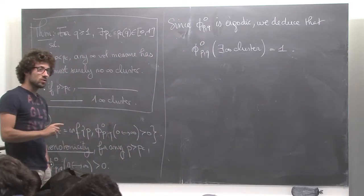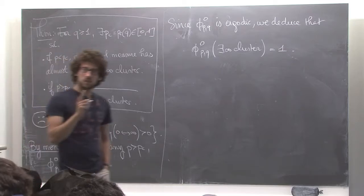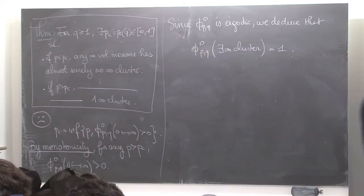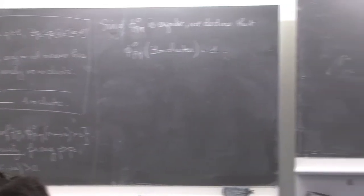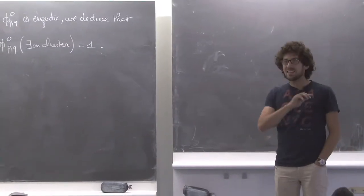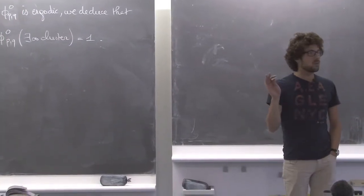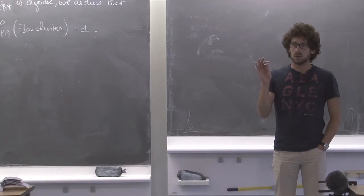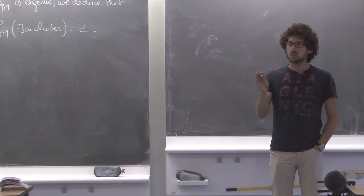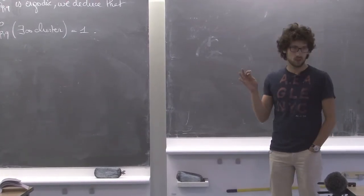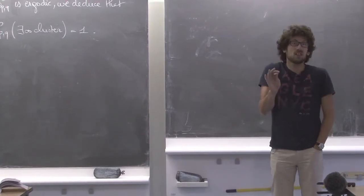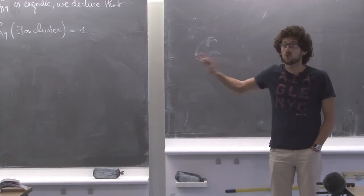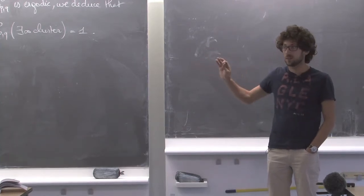Then I told you — and this is something somebody asked me a question about, a good question — any infinite volume measure you can imagine of random cluster has to be larger or equal to phi_0(P,Q). I didn't tell you what an infinite volume measure is, so that's why I didn't even want to prove this statement.